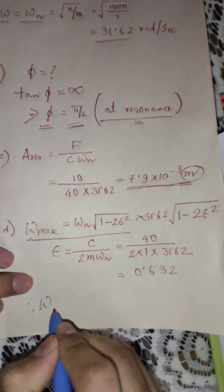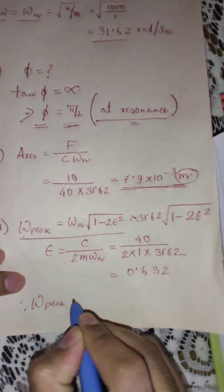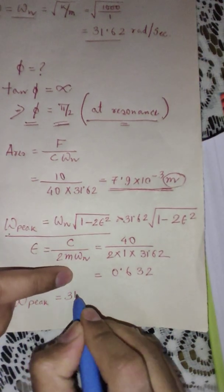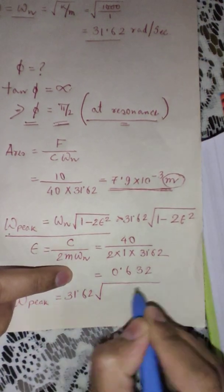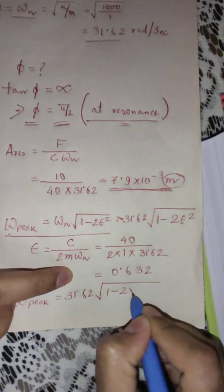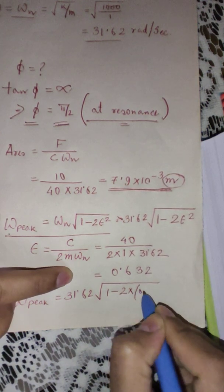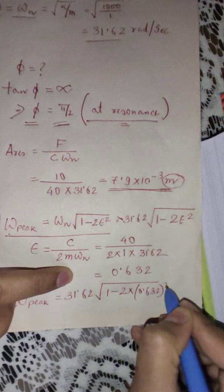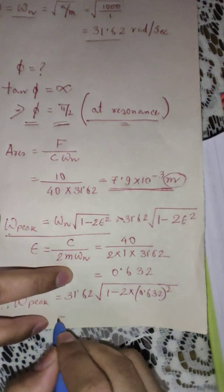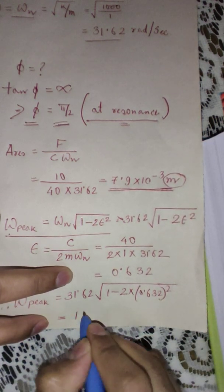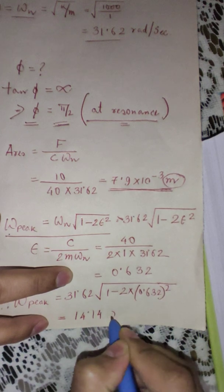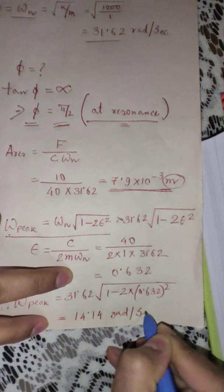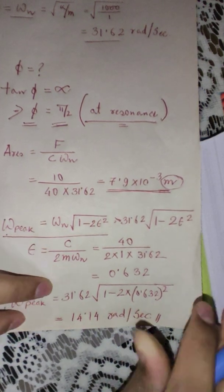So this will give you the epsilon value as 0.632. So from this we can now write omega peak is equal to 31.62 into square root of 1 minus 2 into 0.632 square. So from this I will be getting 14.14 radian per second. So this is the fourth answer.